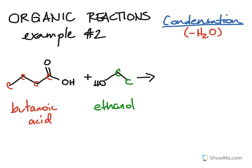Now what kind of ester do we form after putting these two together? Let's draw the butanoic acid part first — 1, 2, 3, 4 — here is our double-bonded oxygen with the O, and then let's attach the ethanol part: 1, 2.